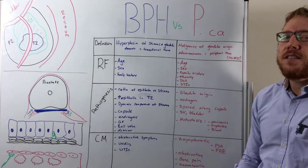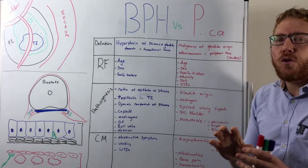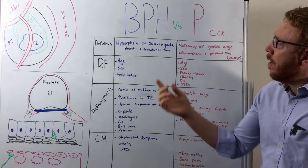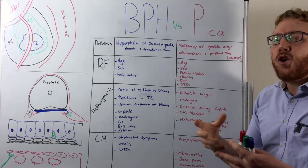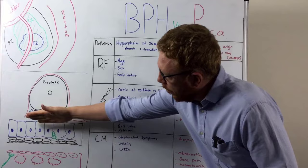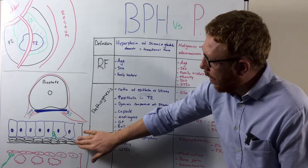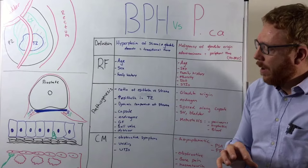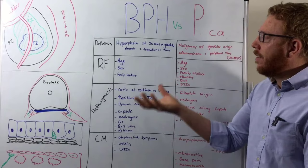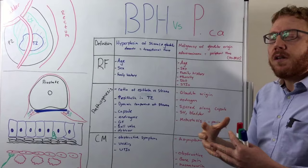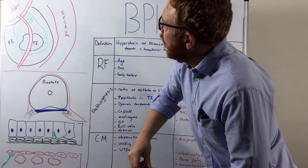Starting with the definition: BPH stands for benign prostatic hyperplasia — sometimes referred to as hypertrophy, which means bigger cells, but hyperplasia is more accurate. Hyper means increase, plasia means growth. So essentially there is an increase in the cellular components of the prostate. There are two cell groups: the epithelial component, which secretes fluid and includes supporting cells, and the stromal cells, such as smooth muscle and connective tissue. These increase in number, and as a result the prostate gets bigger.